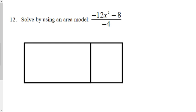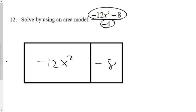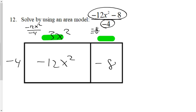Question 12 uses an area model for division. The area is the binomial on top, split into two sections. Negative 4 is the known monomial side. The missing sides at the top are our answer. The area divided by the known side gives: that section divided by negative 4 equals positive 3x squared, and the other section divided by negative 4 equals positive 2. The missing side length is 3x squared plus 2. Note: the positive sign here is your addition sign connecting the two terms.